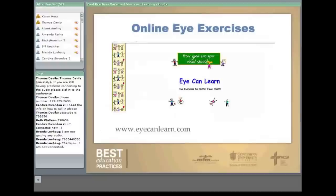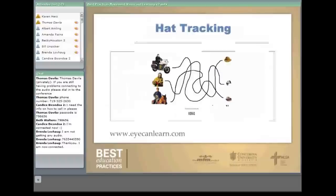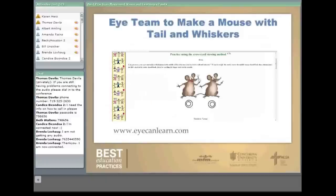There are also online exercises available at ICanLearn.com — a great website. Here's a tracking exercise where students follow from a person to the hat matching. There is also an eye-teaming exercise that tries to converge two mice so one is on top of the other — one mouse has a tail, the other has whiskers, and when they converge, you have a mouse with whiskers and a tail.